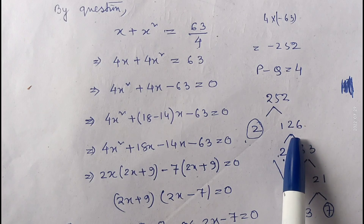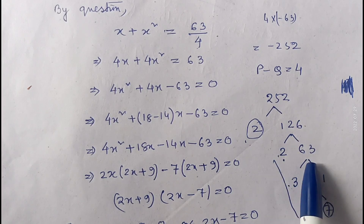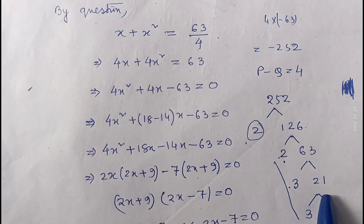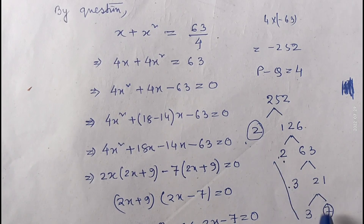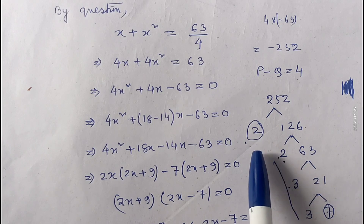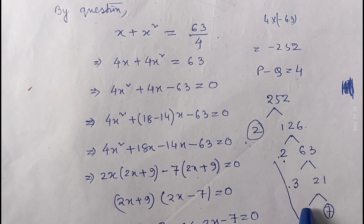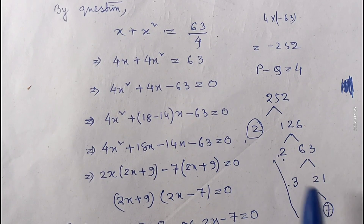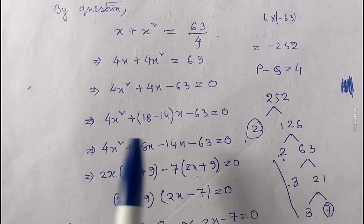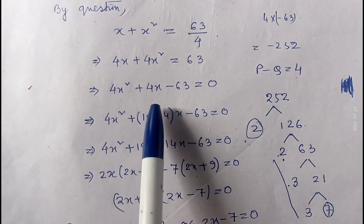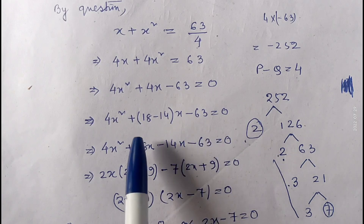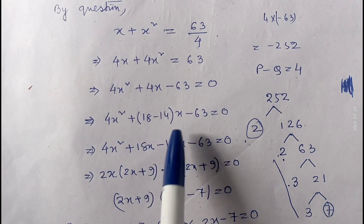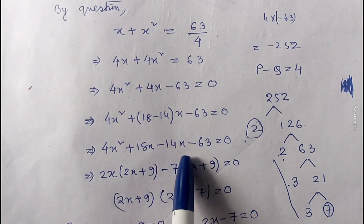Since the product is negative, we need two numbers whose difference equals the middle coefficient, which is 4. Factorizing 252: 2 into 126, 2 into 63, 3 into 21, and 21 is 3 into 7. Grouping: 3 threes are 9, 9 twos are 18, and 7 twos are 14. So 18 minus 14 equals 4. Therefore we write 4x square plus 18x minus 14x minus 63 equals zero.